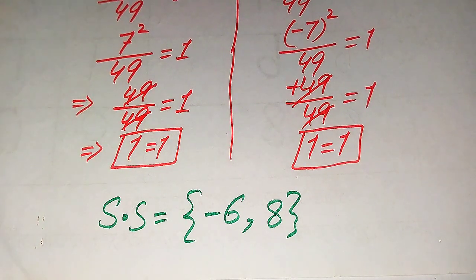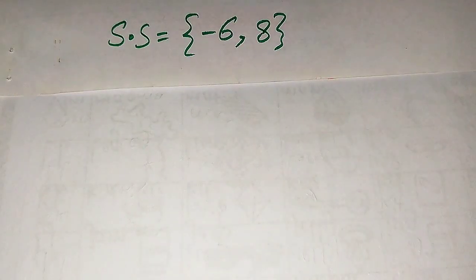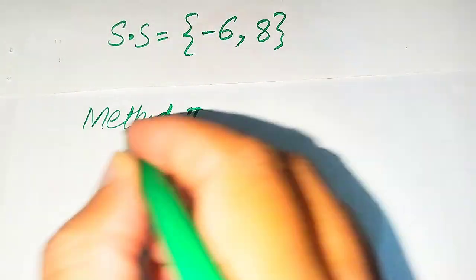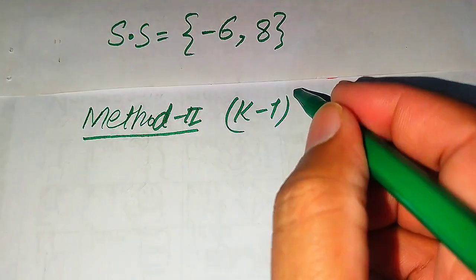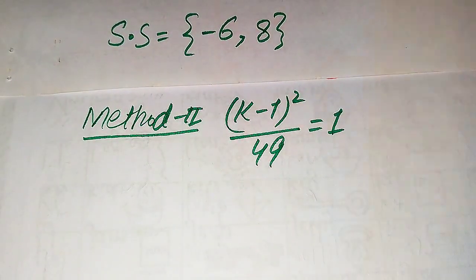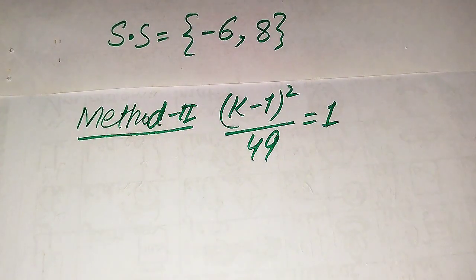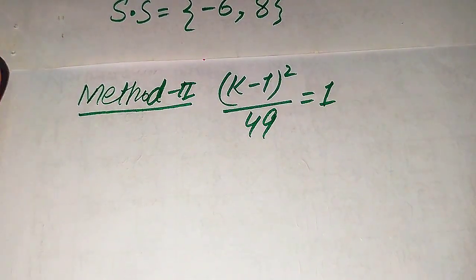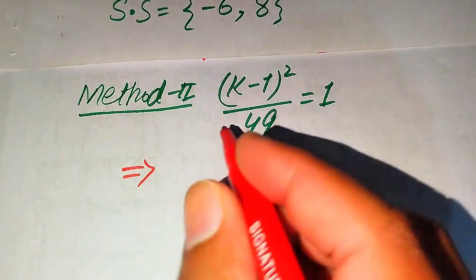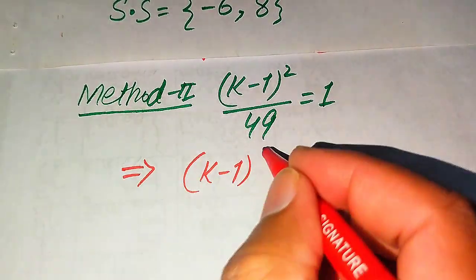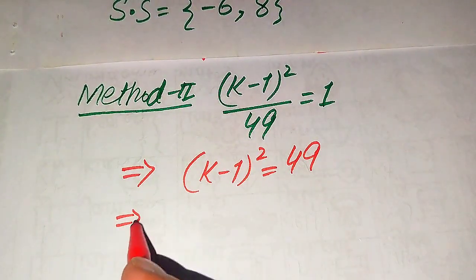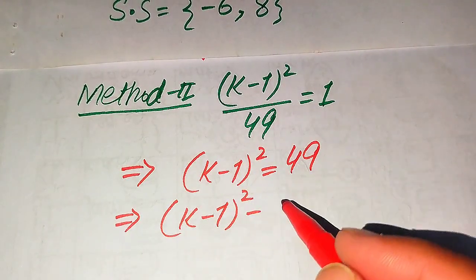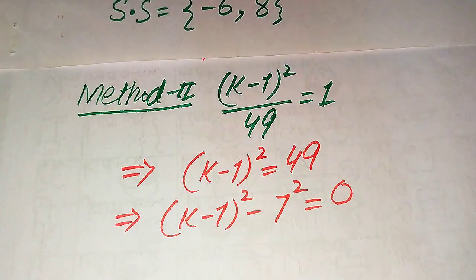Now we solve this problem using Method 2. The given equation is (k minus 1) whole square divided by 49 equals 1. In this method we give a smart alternative way to find k. We first move 49 to the right hand side to get (k minus 1) whole square equals 49. Then we move 49 to the left hand side and write it as 7 squared, giving (k minus 1) squared minus 7 squared equals 0.